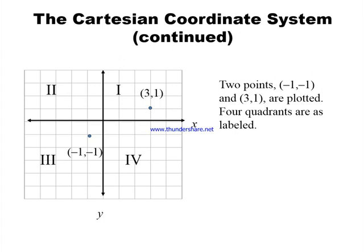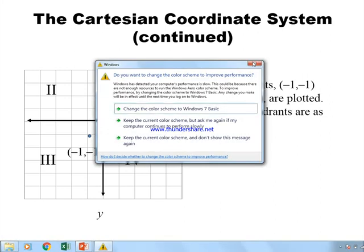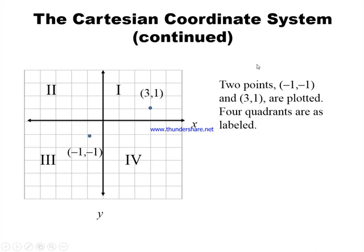These are the four quadrants: one, two, three, and four. In the first quadrant, both x and y coordinates are positive. In the second quadrant, y is positive and x is negative. In the third quadrant, x and y are both negative. In the fourth quadrant, x is positive and y is negative.